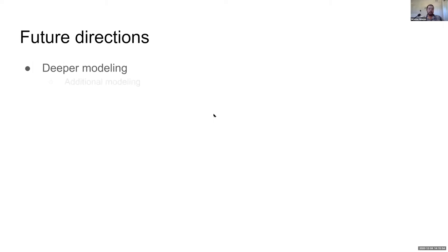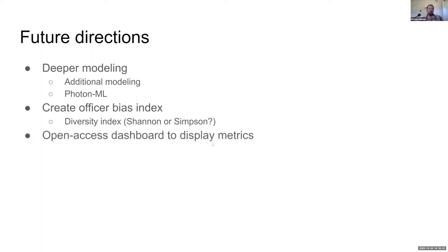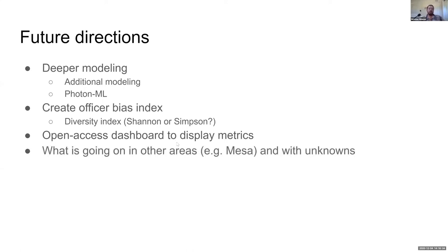Future directions: I'm doing this all on the side, but I still want to do some deeper modeling — additional modeling to more directly get at officer bias within those random effects models, as well as more covariates. Those require deeper data cleaning. I also need to expand this to use Photon ML and Spark because it's hitting size limits given the data and potential interactions. I want to create a bias index for officers using some sort of diversity index, and eventually an open-access dashboard to create public interest in what they're actively funding in terms of bias in policing. I also want to categorize the unknowns, because police officers list unknown race thousands of times as a way to obscure things.